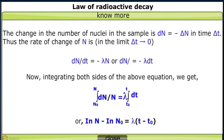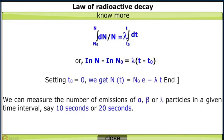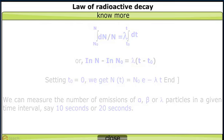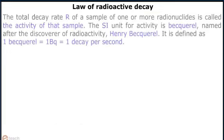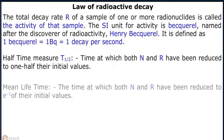The change in the number of nuclei in the sample is dN = −ΔN in time Δt. Thus, the rate of change of N in the limit Δt → 0 gives dN/dt = −λN, or dN = −λ dt. Integrating both sides, we get: ∫(from N₀ to N) dN/N = −λ ∫(from 0 to t) dt, which gives ln N − ln N₀ = −λ(t − t₀).